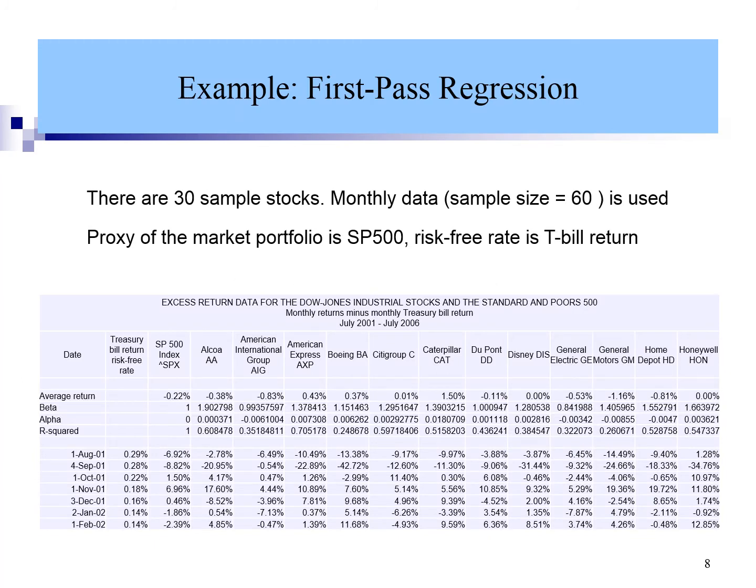This data is available in Blackboard. You may download the file. In the sample data, there are 60 monthly data points and 30 stocks. Take note that the data represents excess return. The average excess return, beta, alpha, and R-squared for each stock have been calculated.